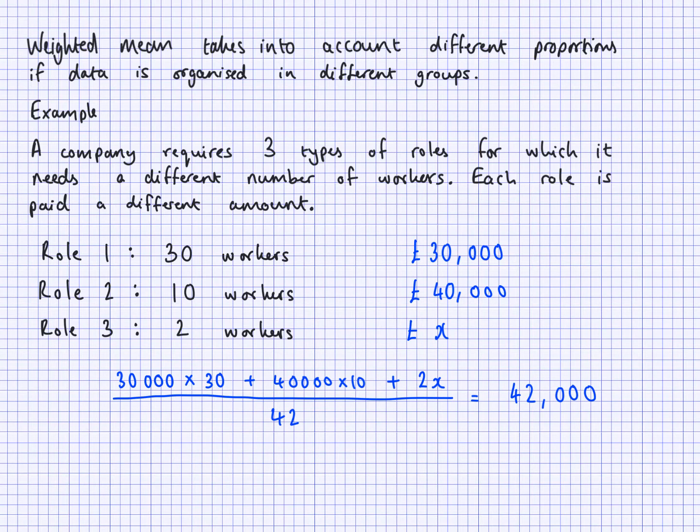If you want to find this value, you just work backwards and rearrange this equation to make X the subject. The key ideas are that weighted mean takes into account different proportions if data is organized in different groups. We've got different groups here: 30, 10, and 2. And then we've got how much they earn, so different proportions here. This takes into account all of that and gives you a nice average.